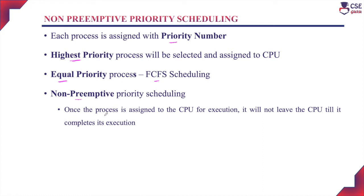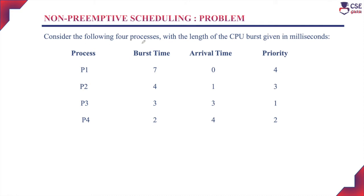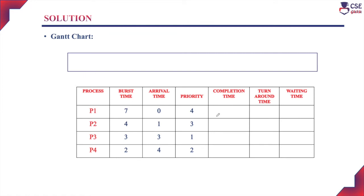Now we will discuss non-preemptive priority scheduling with an example. Consider 4 processes with CPU burst time given in milliseconds, along with arrival time and priority number for each process. We need to find the average turnaround time and average waiting time. First, we will construct the Gantt chart and find the completion time. Since arrival time is given, we must be careful in choosing processes — only those available in the ready queue at that time are compared. Process P1 arrives at 0 milliseconds, and at that time only P1 is available in the ready queue with priority number 4.